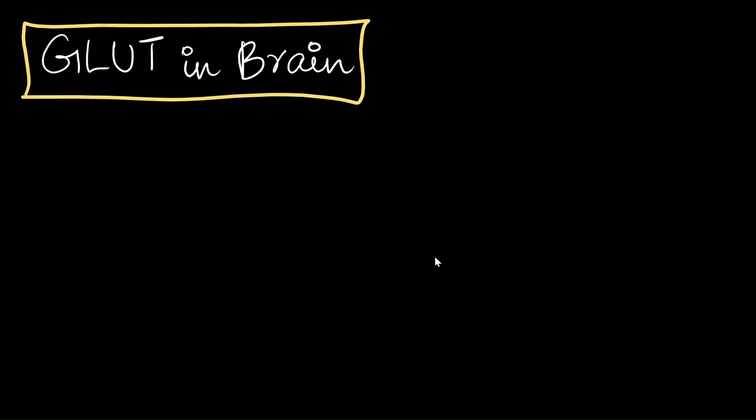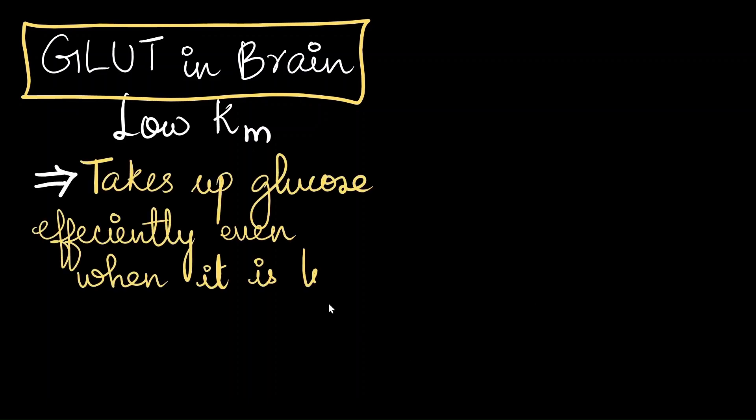Comparing how these two work, the glute transporter in the brain has low Km. We know low Km means high affinity. What it means in real time is that these glucose transporters take up glucose very efficiently, even if the overall glucose amount present in the body is less. It makes sense to do that because brain needs a lot of energy, even when it is not actively in use. Even when we are in a state of fast, all of the glucose will be taken to the brain.